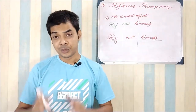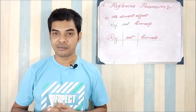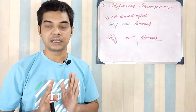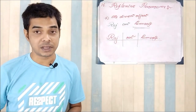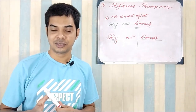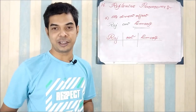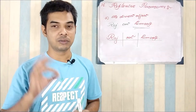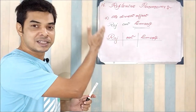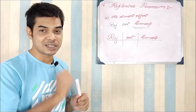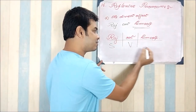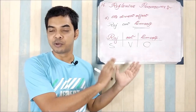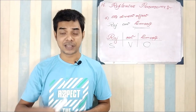First, reflexive pronouns used as a direct object. The sentence is 'Raj cut himself.' Here 'himself' is a reflexive pronoun used as the direct object — who cut himself? Raj. The diagram is the same simple SVO skeleton: 'Raj' as subject, 'cut' as verb, and 'himself' as the object. There is nothing special to do — simply place them in SVO format.